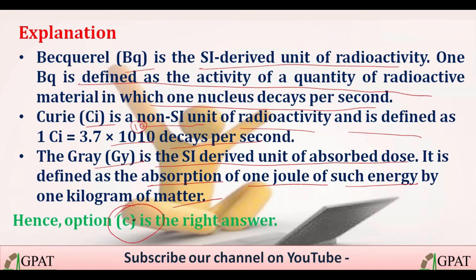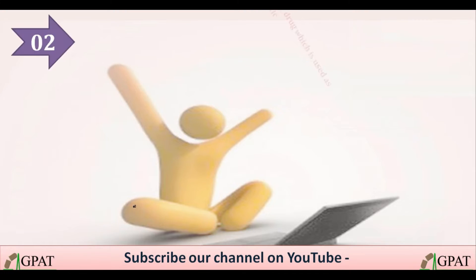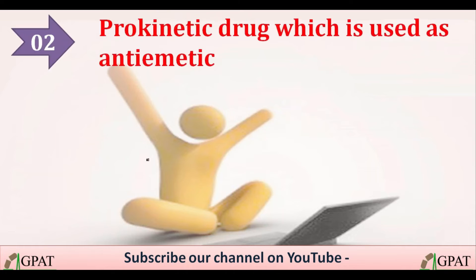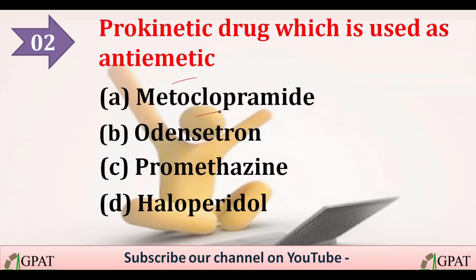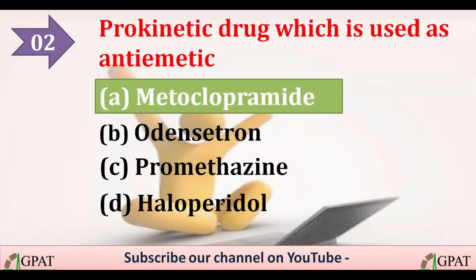The next question: which prokinetic drug is used as an antiemetic? Options are: option A is metoclopramide, option B is ondansetron, option C is promethazine, option D is haloperidol. The correct answer is metoclopramide, which is the prokinetic drug used as an antiemetic.